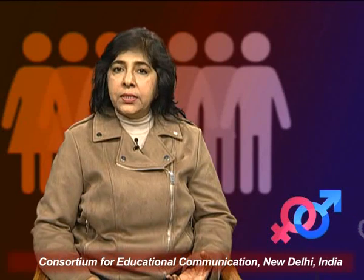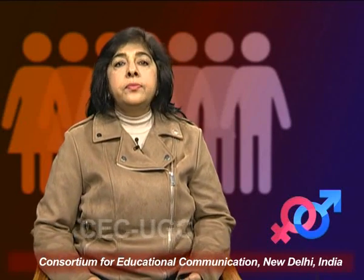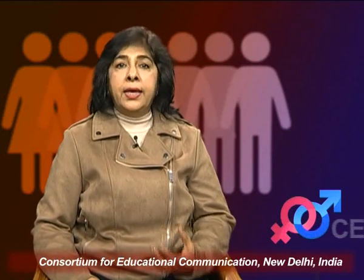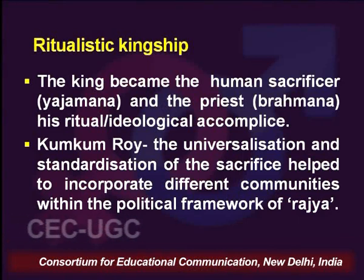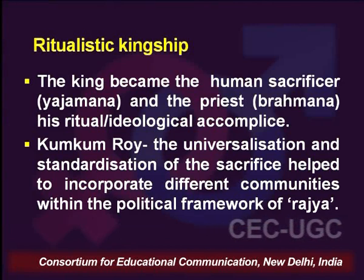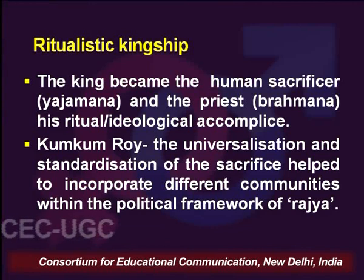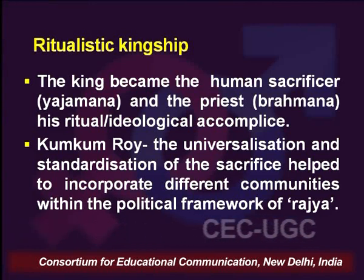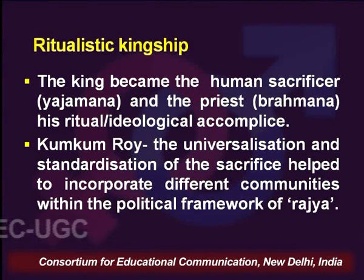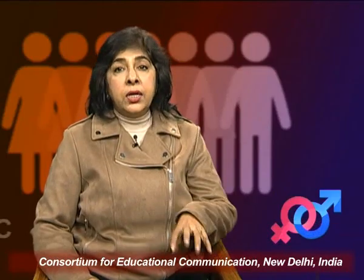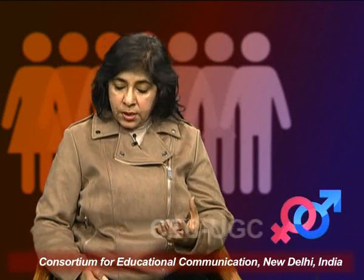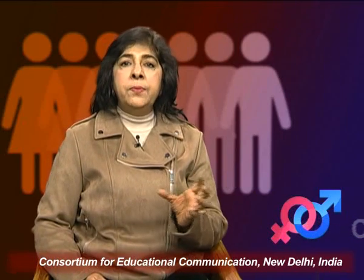Those who performed these rituals were invariably the male rulers. Soon there was a concept of ritualistic kingship which became very important from the later Vedic period onwards. The king became the human sacrificer — the Yajmana — and the priest or Brahmana became his ideological accomplice. As pointed out by Kumkum Roy, this resulted in a universalization and standardization of the sacrifice, and also incorporation of different communities, different ideologies, and different social and cultural processes within the political framework of Rajya.